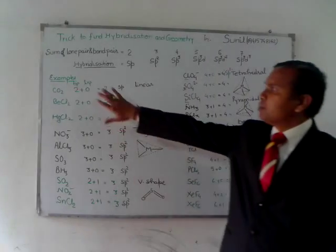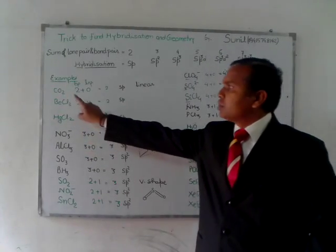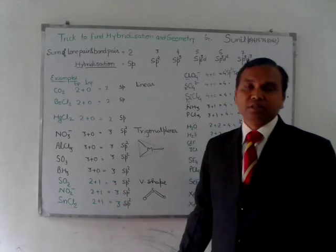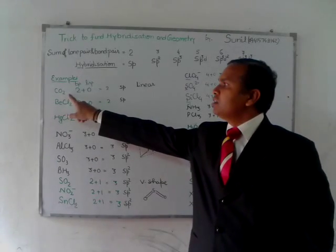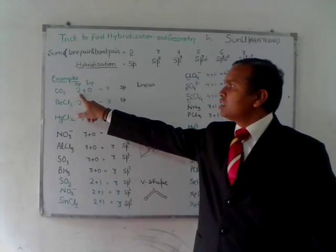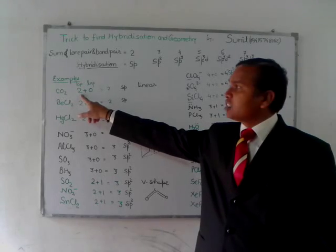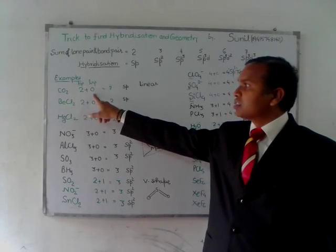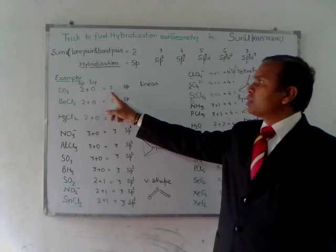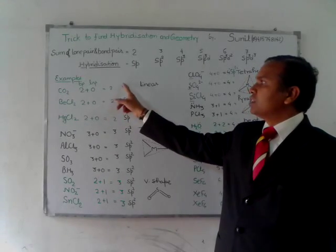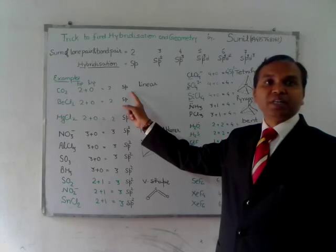Here are some examples. The first one is carbon dioxide. With carbon dioxide, here two bond electrons are present and no lone pair of electron is present, so total sum is 2 and this is why it is sp hybridized with linear geometry.